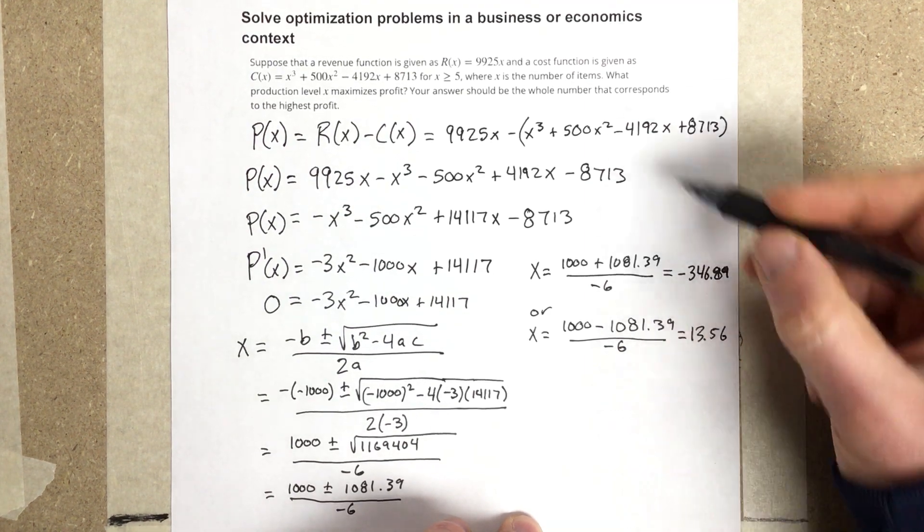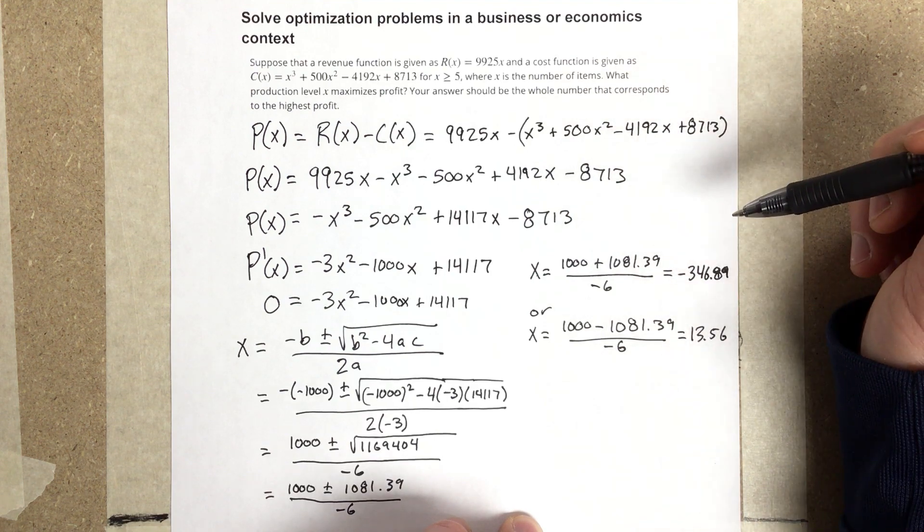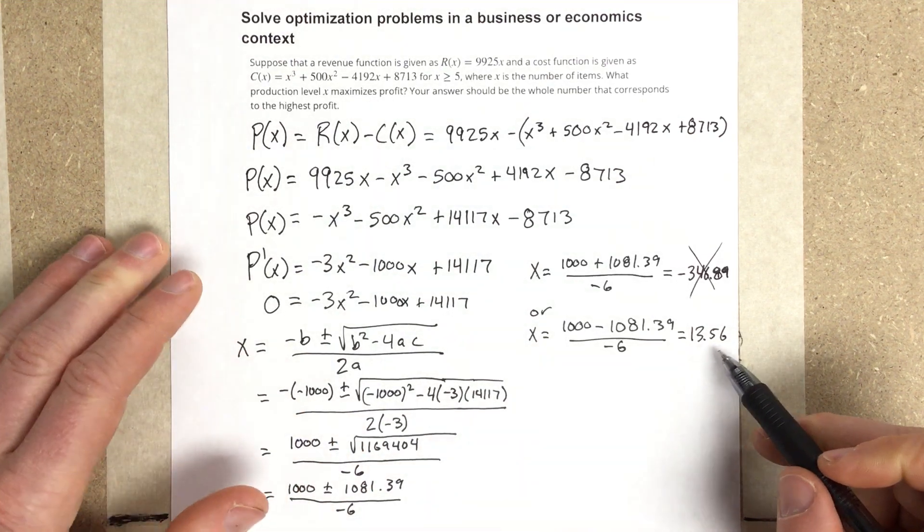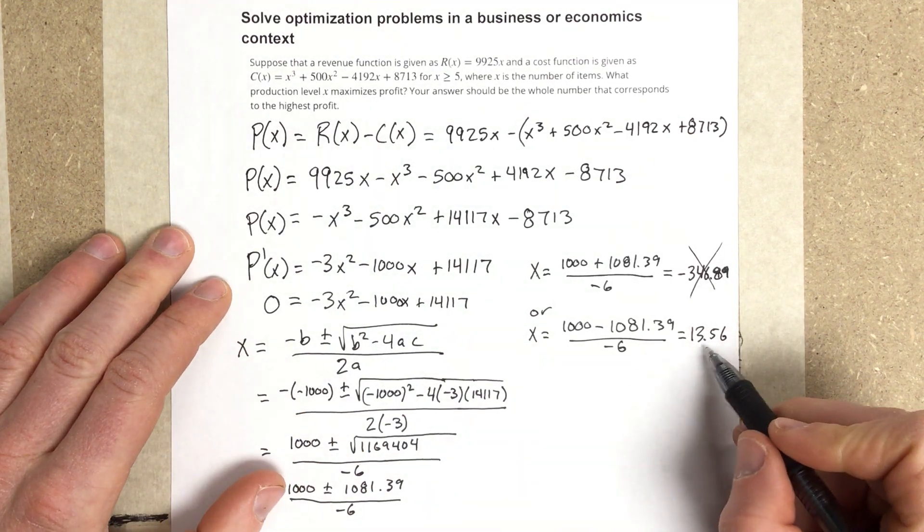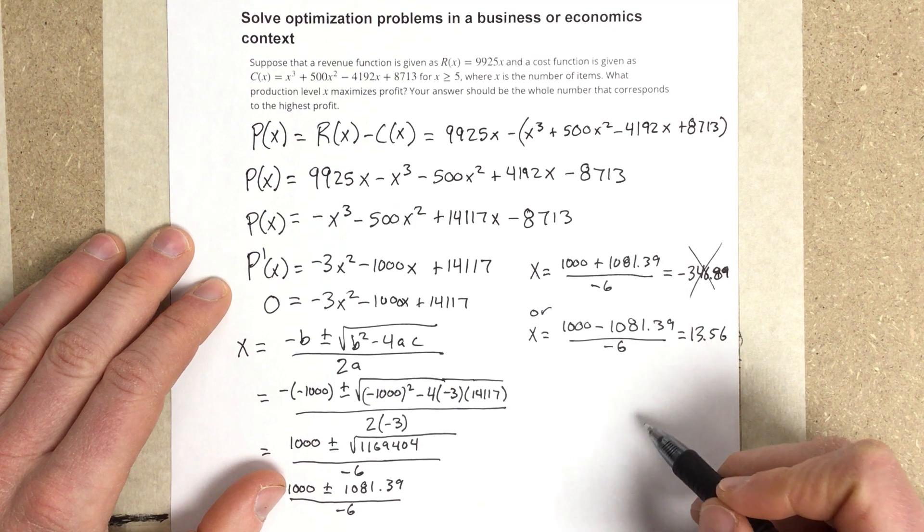Now this will not work because this is the number of items. We can't have -346 items, so we're going to cross this one out. We cannot have 13.56 items. We have to either have 13 or 14 items.